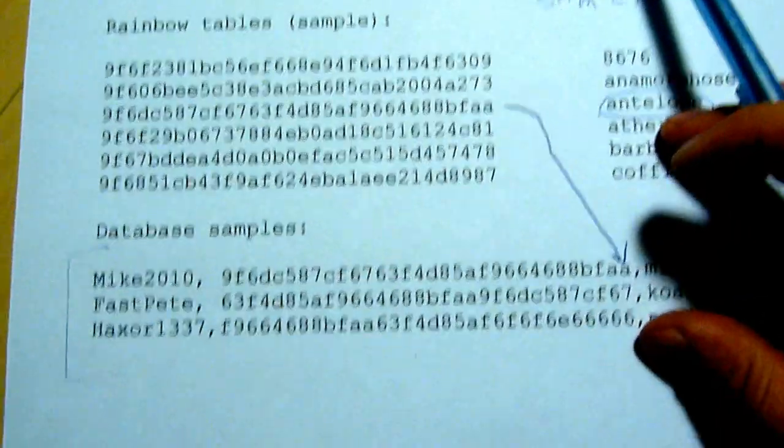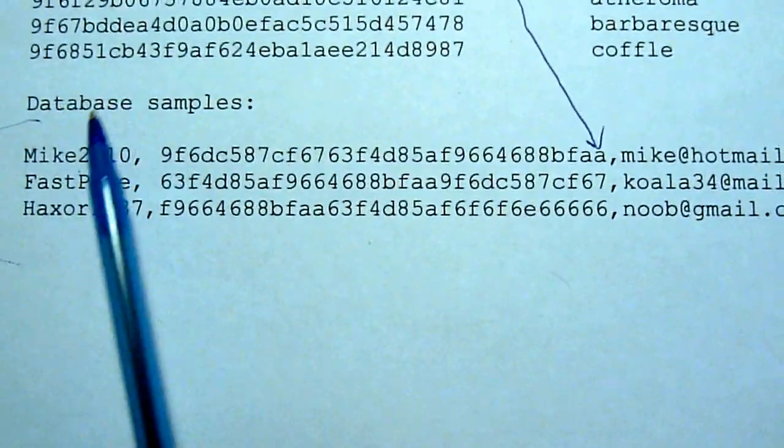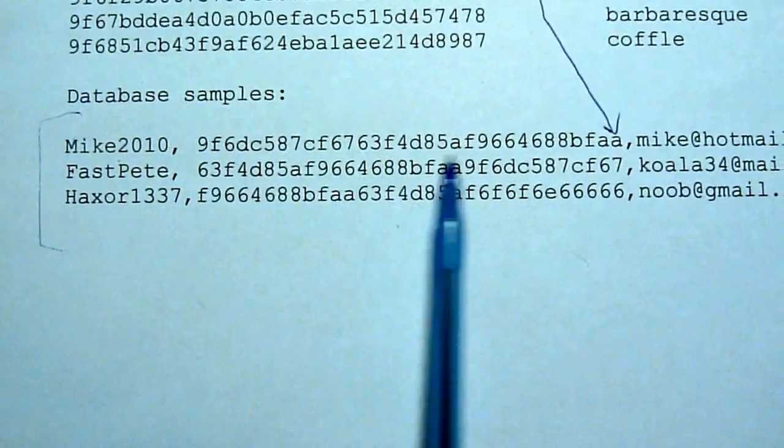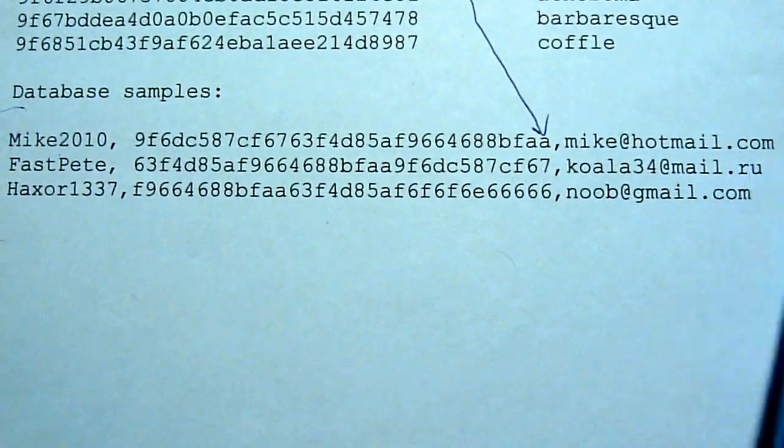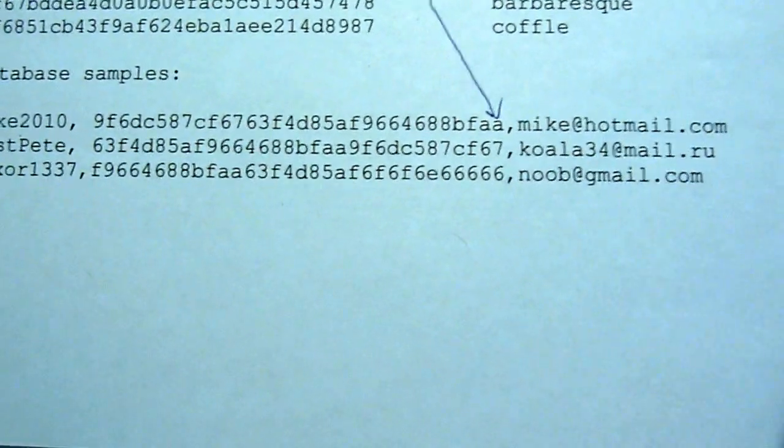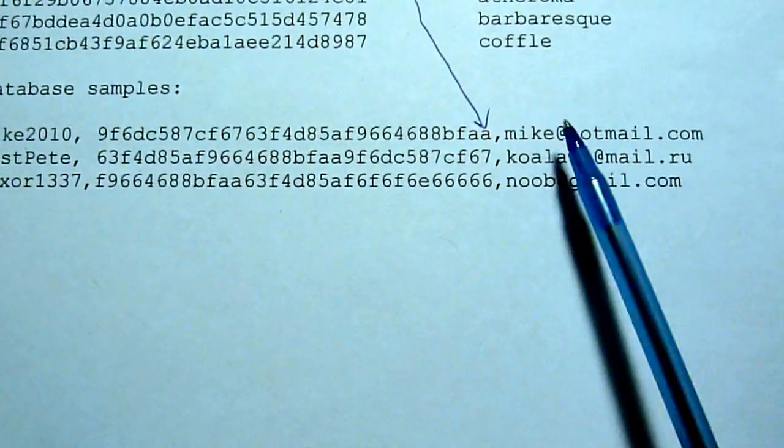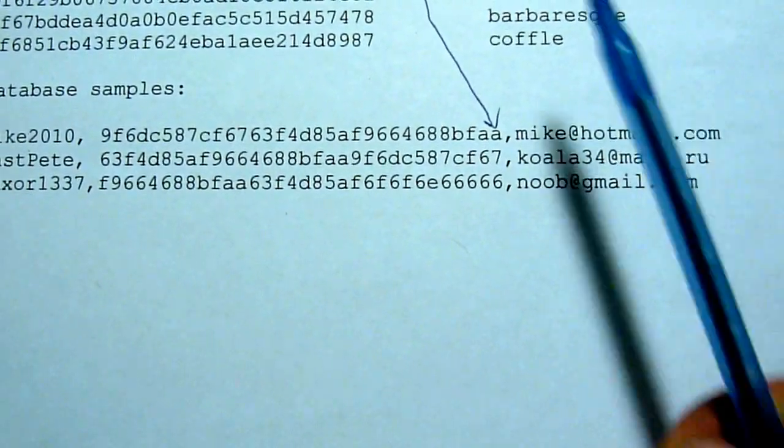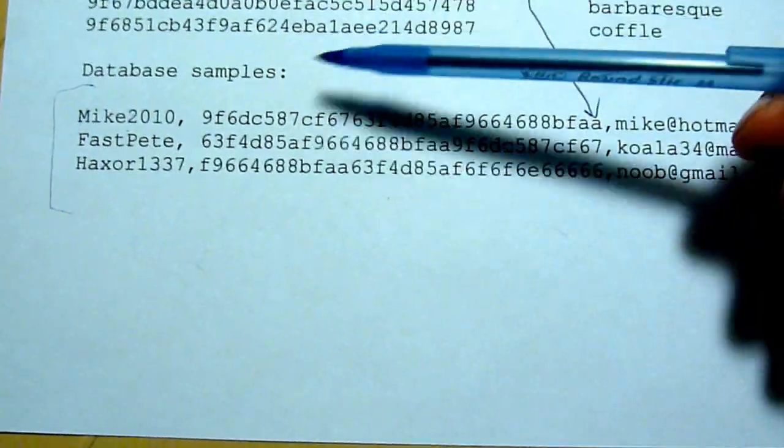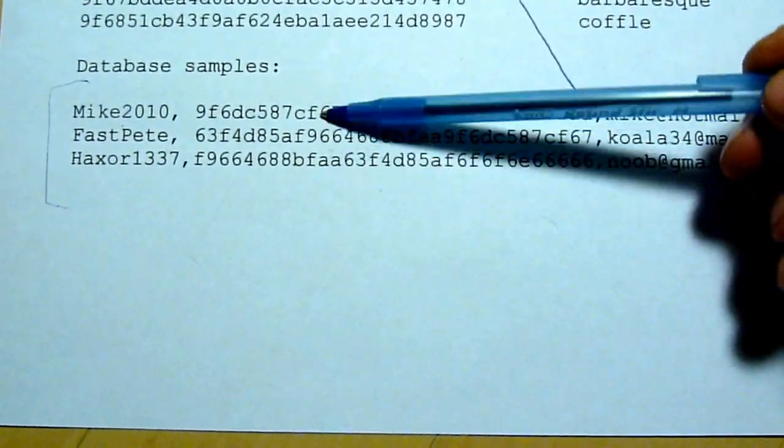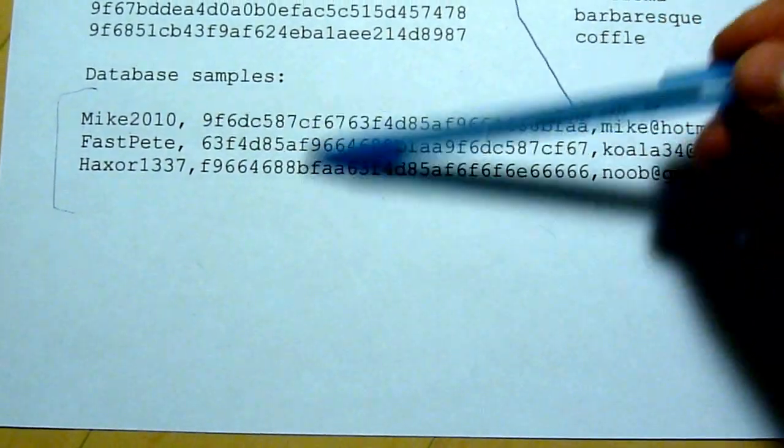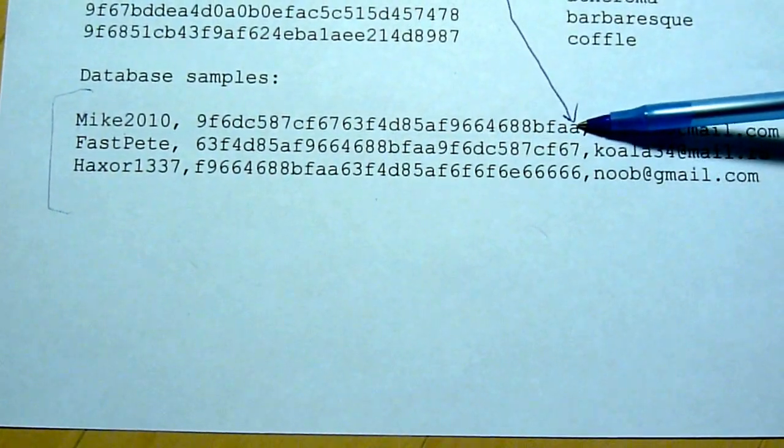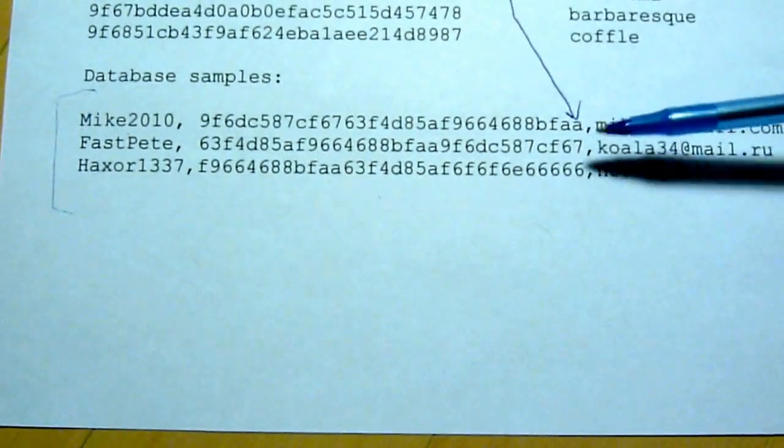So now we'll take a look at the sample database. This will be a typical forum database. You'll have your username, the hash of the password, the email, Facebook page and profile information. So this is what hackers would steal if they hacked the forum or message board. They will steal this data set and they will see these hashes. They won't see the actual passwords.